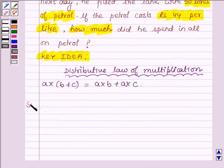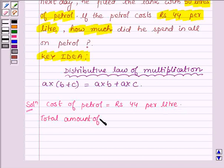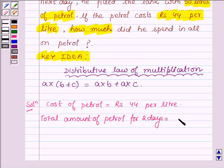Let us now start with the solution. Cost of petrol is equal to Rs. 44 per litre. And the total amount of petrol for two days, that is for Monday and for Tuesday, is equal to 40 plus 50 litres.